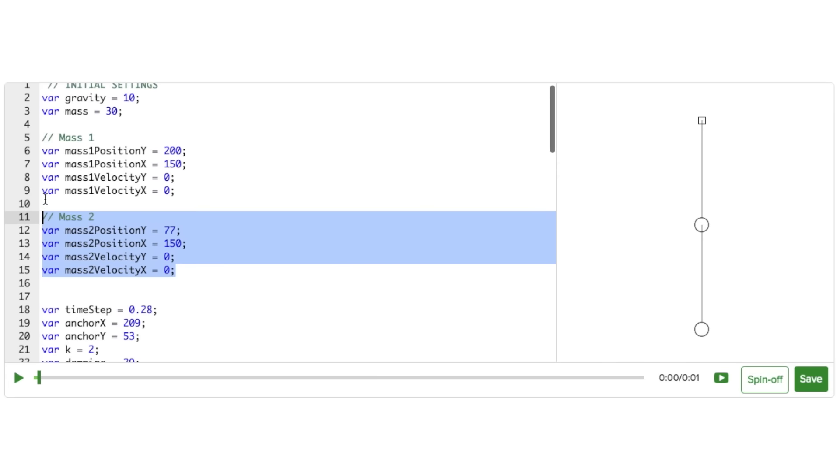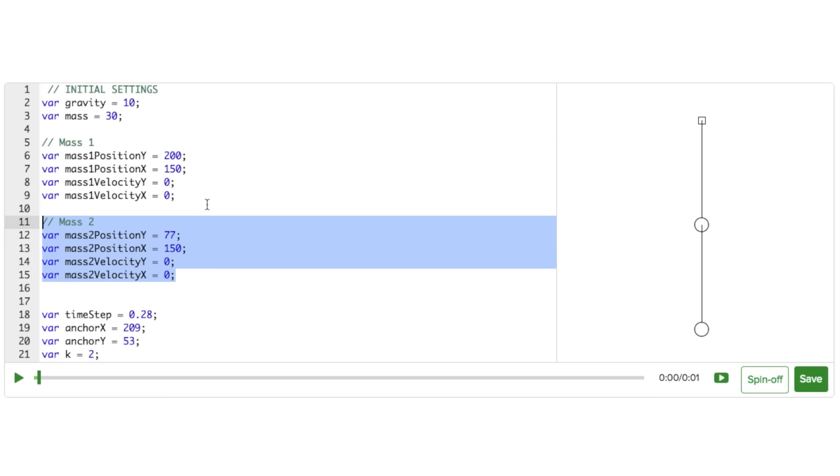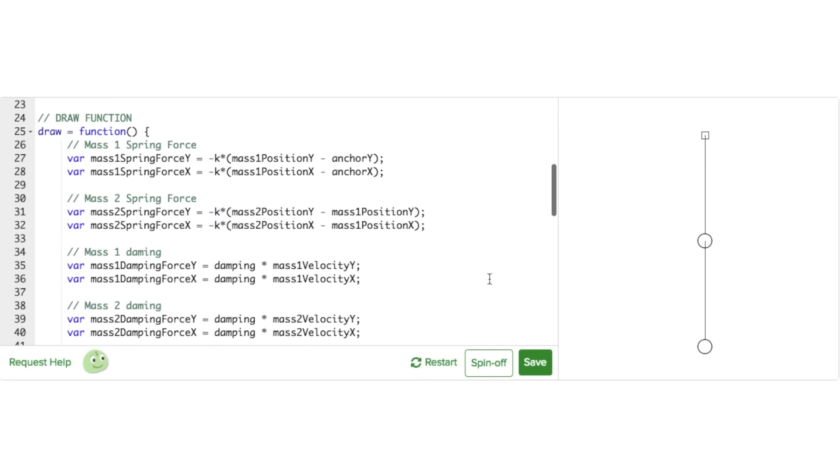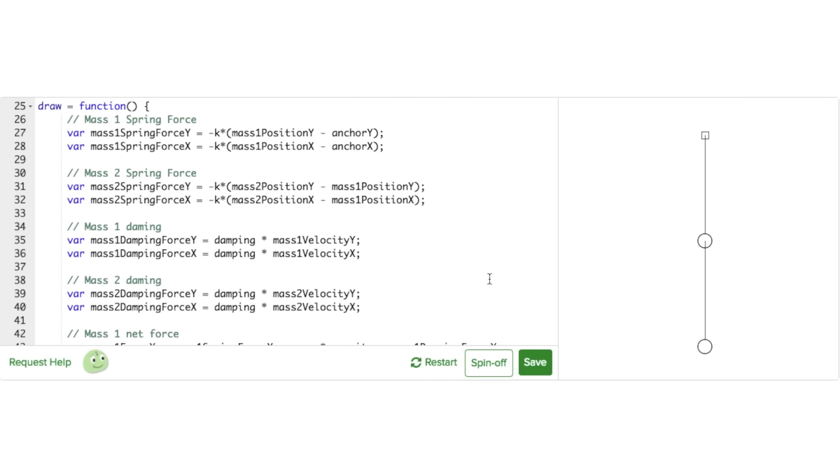At the top, we'll need new initial variables to represent both the position and velocity of mass 2. I'll set the initial position of mass 2 so that it's below mass 1. The initial velocity of mass 2 is zero as well. To add a new mass 2, we have to double up all of our equations used for mass 1. However, there are two key differences.